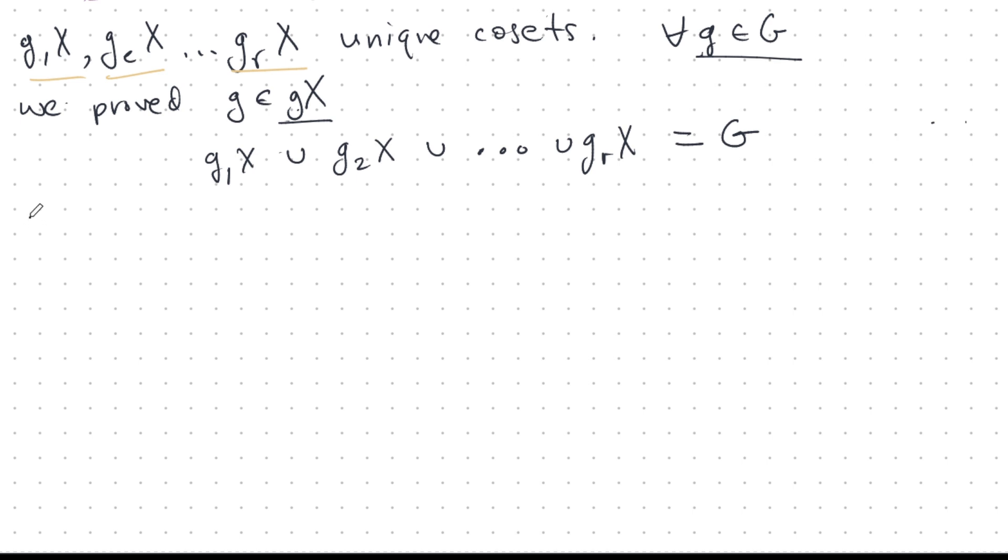And we also know from the last video that each of these distinct cosets, any two of them are disjoint. So if I is not equal to J, then GI X intersected with GJ X is null. They are disjoint. We proved that in the previous video.